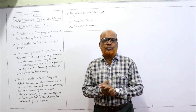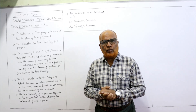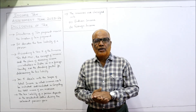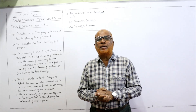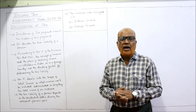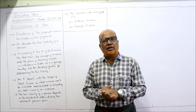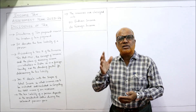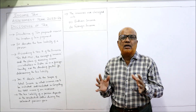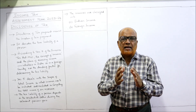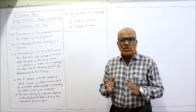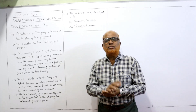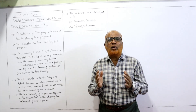Incidence of tax means the scope of income. We have to find out which income is taxable because a person may earn income from India or abroad. Section 5 of the Income Tax Act 1961 gives the provisions regarding the scope of income — which income should be included and which should be excluded from the total income of the assessee.